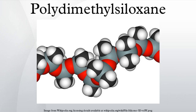Structure: the chemical formula for PDMS is CH3[Si(CH3)2O]nSi(CH3)3, where N is the number of repeating monomer Si(CH3)2O units.